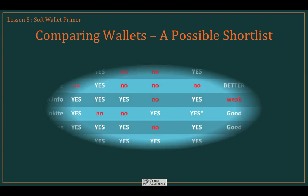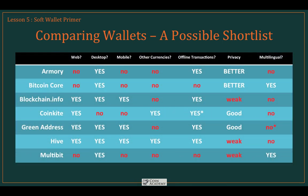Our possible shortlist includes Armory, Bitcoin Core, Blockchain.info, CoinKite, GreenAddress, Hive, and Multibit. I know this leaves off a couple of popular names — Coinbase and Mycelium in particular — and we'll get to those a little later on. Right now we're going to look at this set of seven because it's a really solid set that's going to address most people's needs. We'll look at each of these seven in a little more detail.